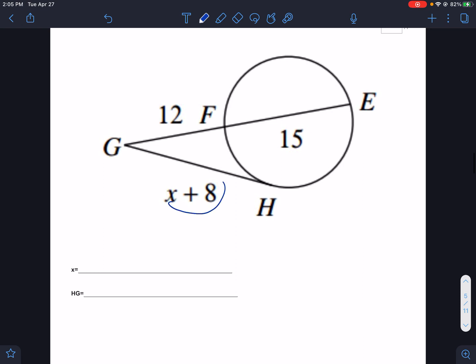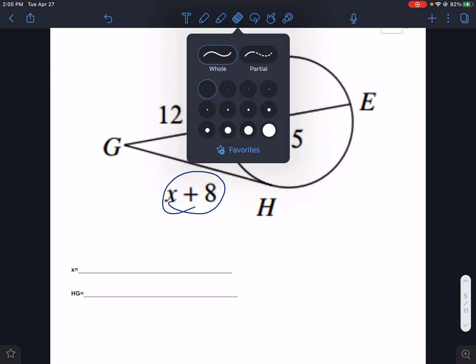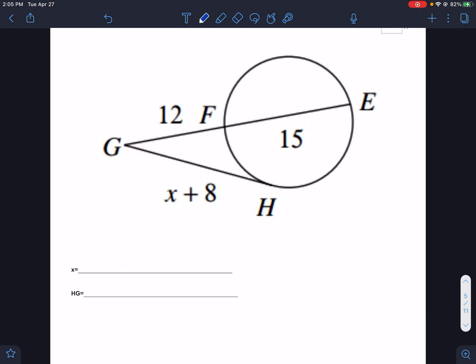Here we have another situation. Outside times total. Well, because it's tangent, we can just square that number. So that's x plus 8 times x plus 8, which is x squared plus 16x plus 64. Up here, we have outside 12 times total would be 12 plus 15, which is 27.